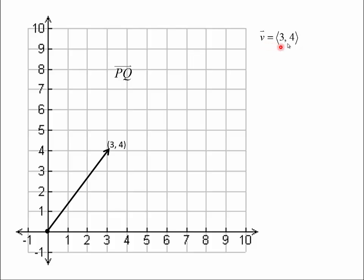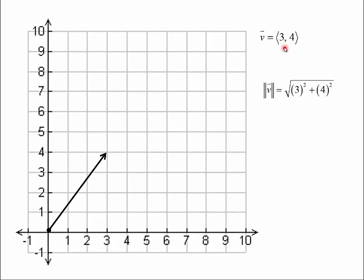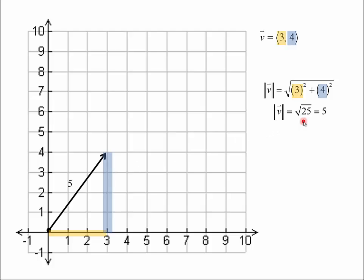This vector is understood to start at the origin, and the terminal point is here. Now I want to talk about the magnitude of the vector. The magnitude is simply the length, and it's always positive. I get the magnitude by taking the square root of 3 squared plus 4 squared — squaring both of those, adding them, and then taking the square root. Notice that's just the Pythagorean theorem: a squared plus b squared equals c squared. The magnitude is like the hypotenuse of that right triangle.